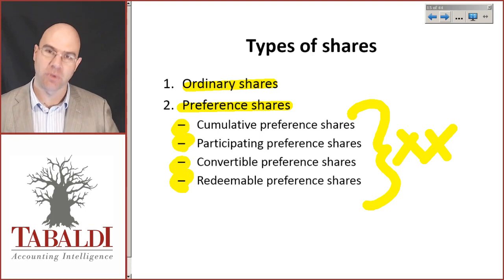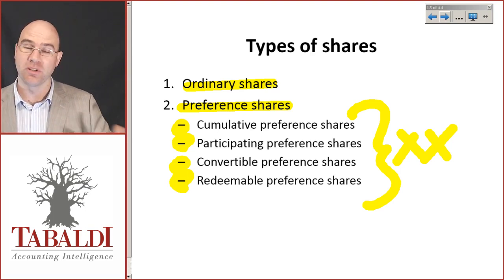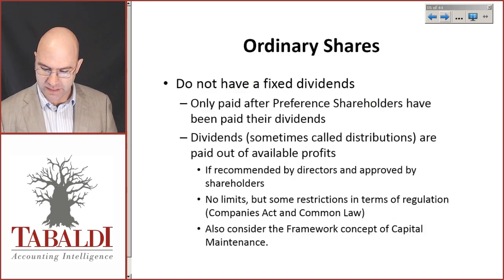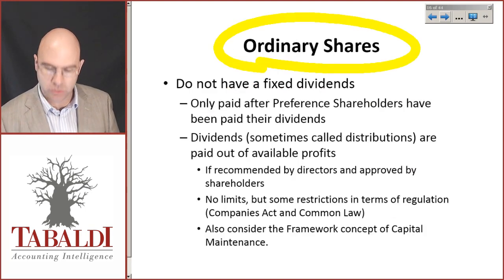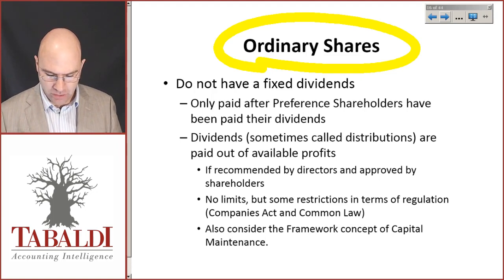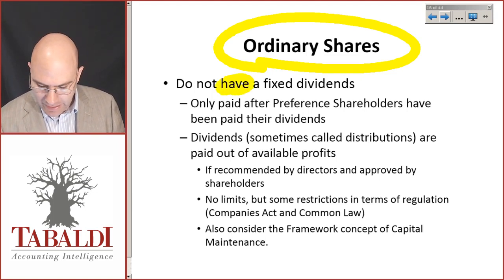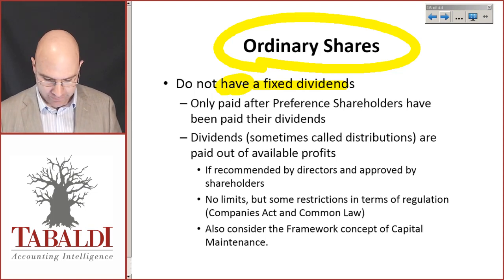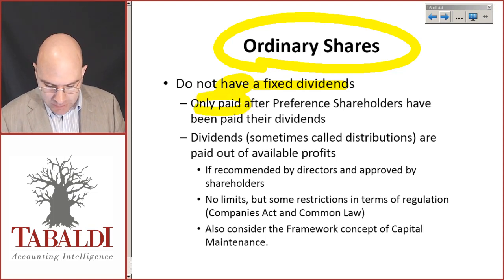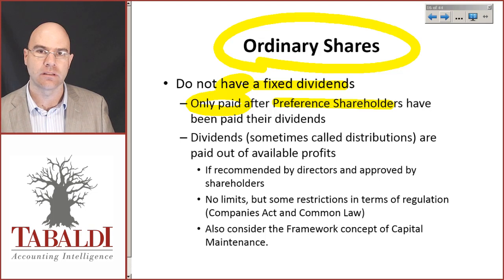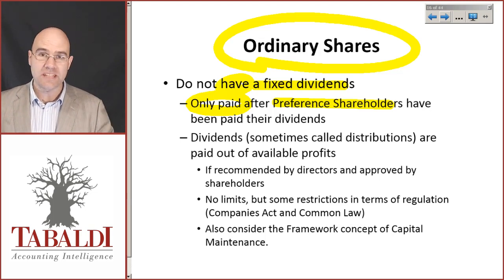So I could have a cumulative participating convertible preference share. Let's quickly understand the one you'll deal with most in the study unit: the ordinary share. Ordinary shares do not have a fixed dividend — there's not a fixed hundred thousand rand dividend every year. We only pay ordinary shareholders after preference shareholders have been paid their dividends, because preference shareholders get preference.